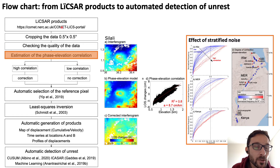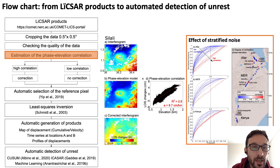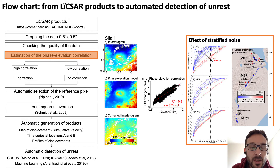Here on the left I present the flowchart I use to automatically produce the time series and detection of unrest, with several improvements. For example, the estimation of the phase-elevation correlation. You can see an example on Silali volcano of an interferogram showing a high correlation between the phase and the elevation. We use this empirical model to correct interferograms for certain volcanoes, and we performed a statistical analysis of the R-squared values for all interferograms at each volcano — shown by the lines on the right. The blue lines show volcanoes with low correlation and the red lines show high correlation. These high-correlation volcanoes are the ones we corrected.